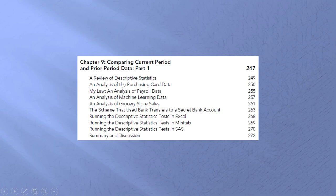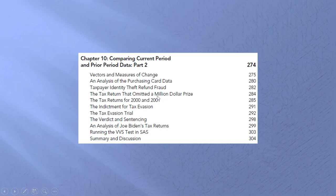Now we're going to compare the current period to the prior period. There are two chapters here. This one deals mainly with descriptive statistics, and we are looking for clues that something has changed — and that change could be due to fraud or error.